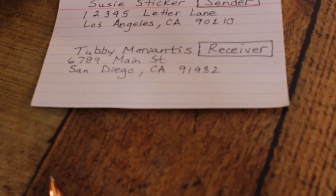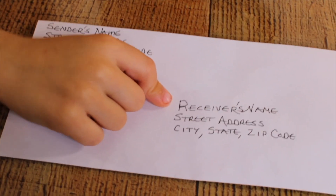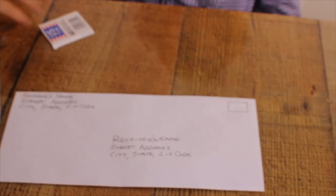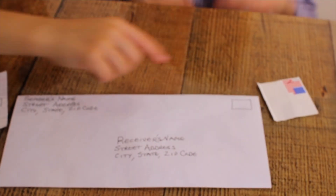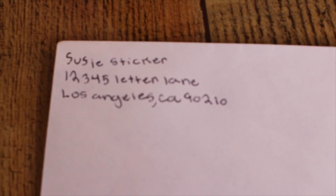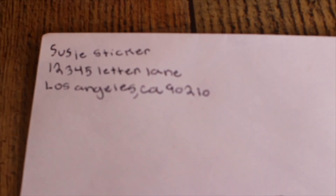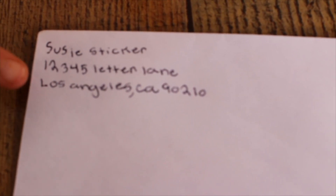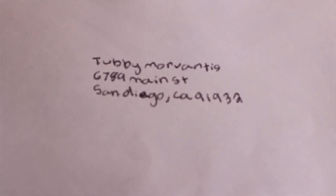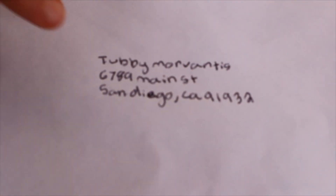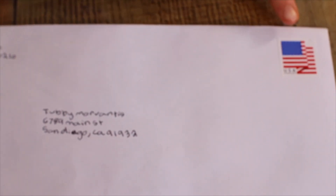Where would we put the receiver? Tubby Morvantis. Point to where we would put the stamp. So we have the sender's name, street address, city, state, and zip code. And for the receiver, we have the same information — his name, the street address, the city where he lives, the state and the zip code. And finally, the stamp.